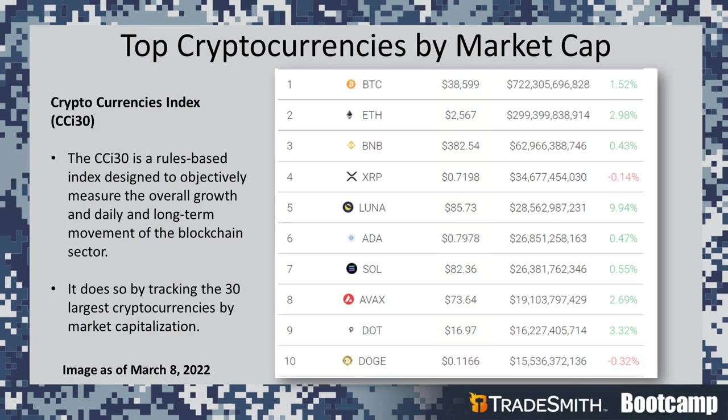Let's take a look at the top cryptocurrencies by market capitalization. The top cryptocurrencies are typically ranked by market capitalization because it's a direct reflection of investor appetite. The Cryptocurrencies Index, or CCI 30 for short, is a rules-based index designed to objectively measure the overall growth and daily and long-term movement of the blockchain sector. It does so by tracking 30 of the largest cryptocurrencies by market cap. I've included a link to the CCI 30 website — if you're new to cryptocurrency investing, the CCI 30 might help you find a good starting point.